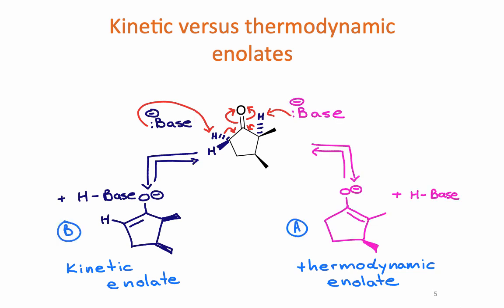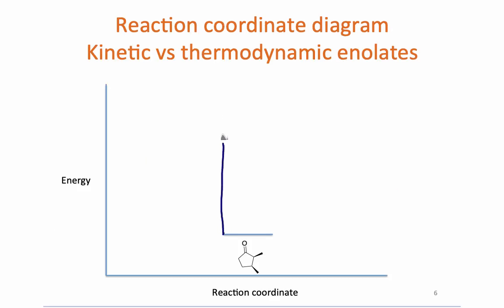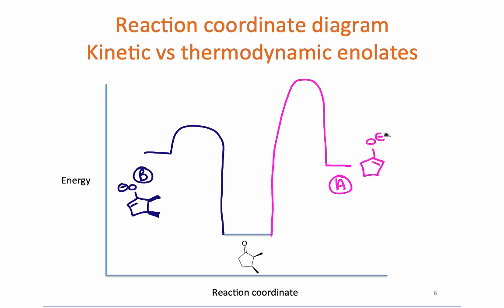If we look at this using a reaction coordinate diagram, notice that we have at the lowest energy the neutral starting material. What takes the highest amount of energy is the formation of the thermodynamic enolate. And what takes less energy but leads to a less stable product is the formation of the kinetic enolate.